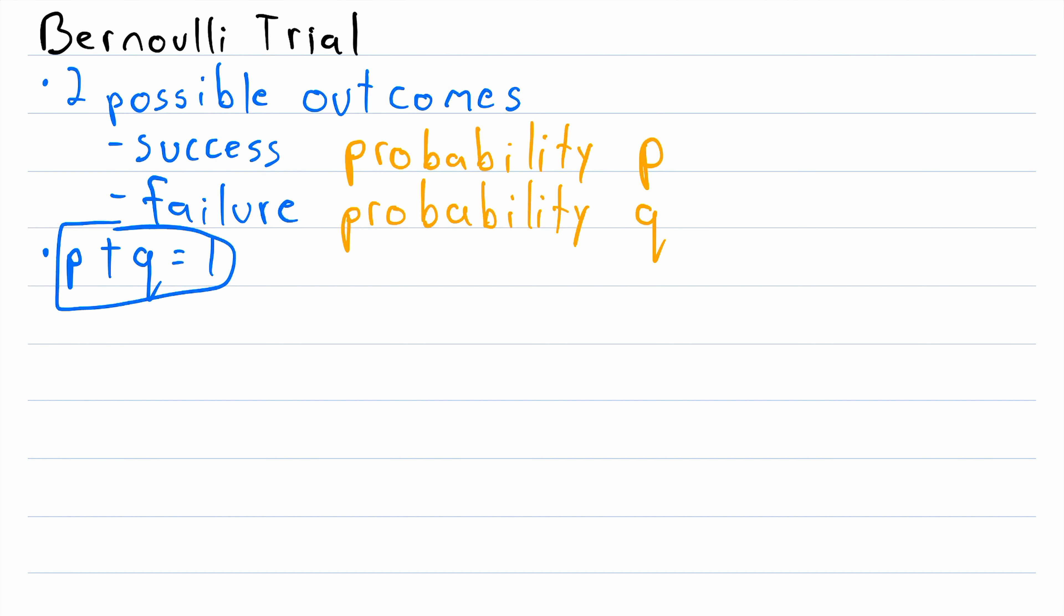Since we have this equality, if we know p, the probability of success in a Bernoulli trial, we can easily solve for q, because q is equal to one minus p. Similarly, p is equal to one minus q. And I just want to point out to prevent confusion, these are bullets, they are not mathematical symbols, because I'm just writing a list here.